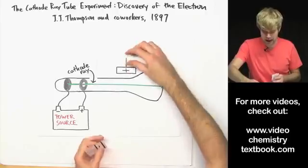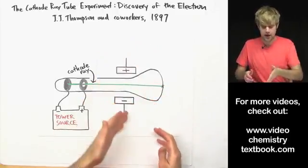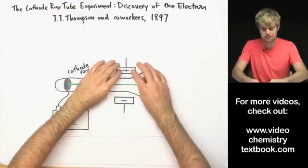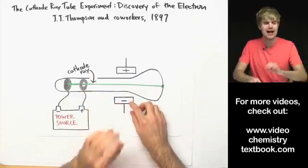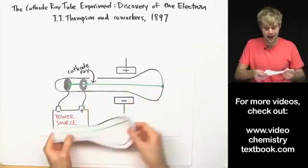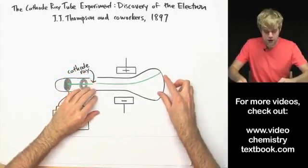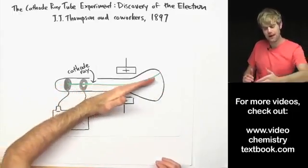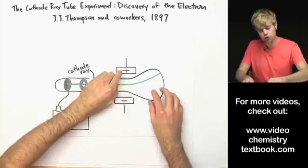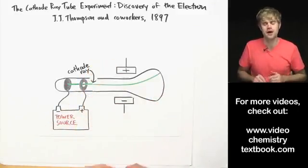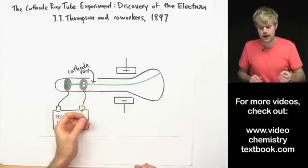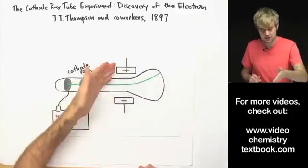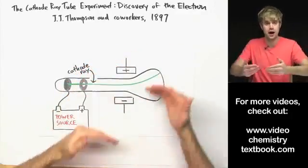He takes two metal plates and puts them on either side of the cathode ray tube. And then he turns on electricity which makes the top plate positively charged and the bottom plate negatively charged. And check out what happens to the cathode ray. When he turns on the power, he sees it now instead of going straight through, the cathode ray bends up. It bends up towards the positively charged plate. So based on this, he reasons that the cathode ray must be made of stuff that's negatively charged since it's attracted to the positively charged piece of metal and he knows that opposite charges attract.